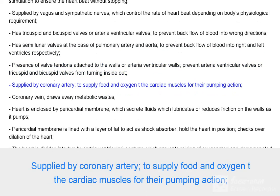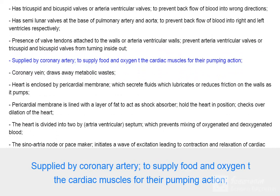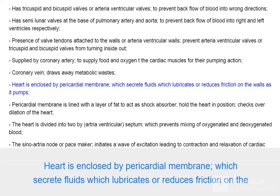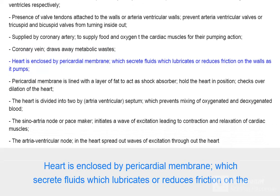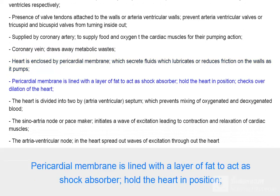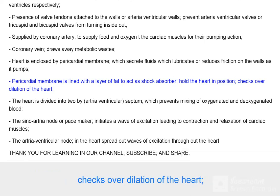The heart is supplied by the coronary artery to supply food and oxygen to the cardiac muscles for their pumping action. The coronary vein draws away metabolic wastes. The heart is enclosed by the pericardial membrane, which secretes fluid that lubricates and reduces friction on the walls as it pumps. The pericardial membrane is lined with a layer of fat to act as a shock absorber, hold the heart in position, and check over-dilation of the heart.